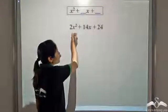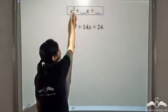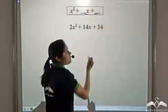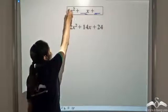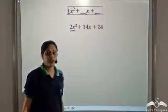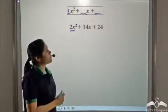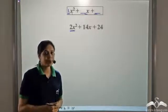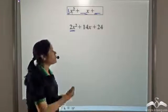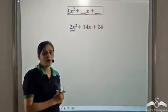We need to factorize 2x² + 14x + 24. We have learnt how to factorize expressions of the form x² + something, where the coefficient of x² is 1, but here the coefficient of x² is not 1. Does that mean we cannot factorize it using this method? Well, are you forgetting something? You are forgetting the first rule of factorization: we try to find what is common in all the terms and take that out as common.